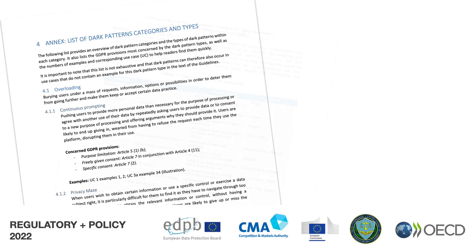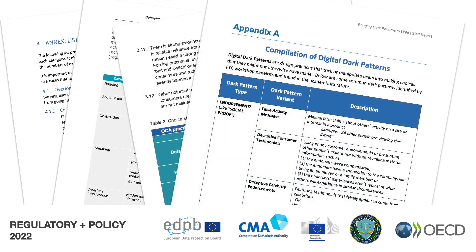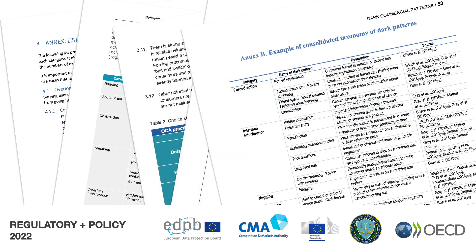Regulators and policymakers have also shown interest in contributing to this space, with five reports from the EU, UK, and US bodies published in 2022. These sources represent interest from perspectives including consumer protection and data protection, with both broad coverage of digital services and attention to specific services such as social media. In our analysis, we found that these sources often lacked citation provenance trails for typologies and definitions, making it difficult to trace where new or specific types of patterns emerged and under which conditions.